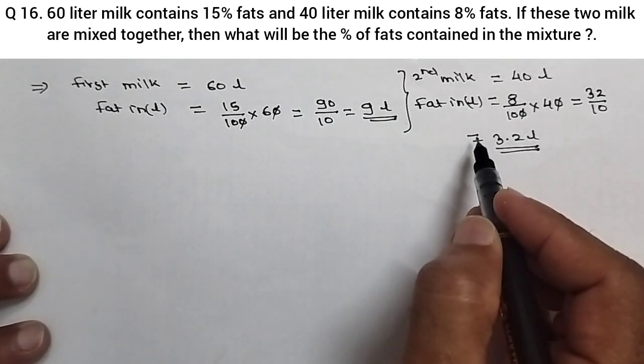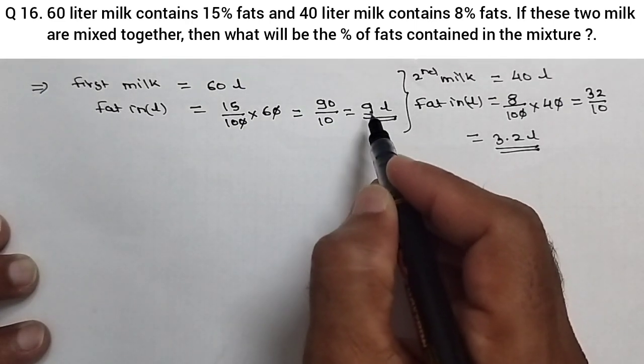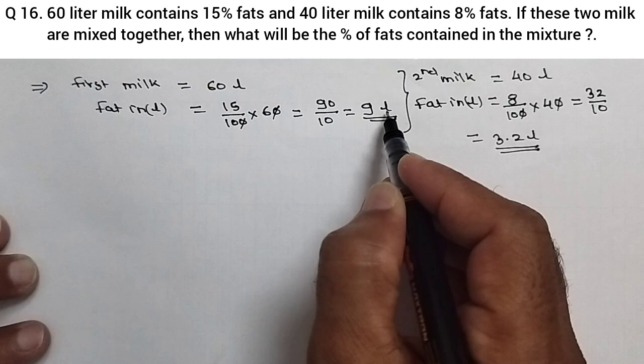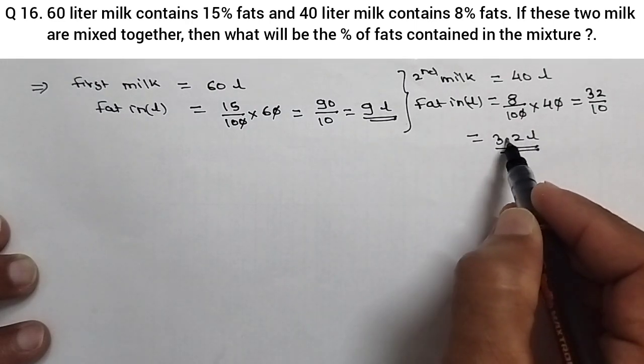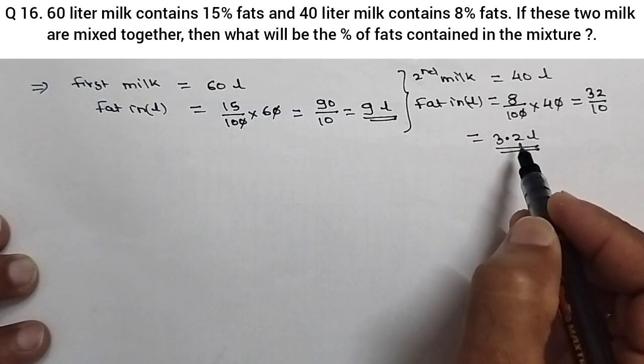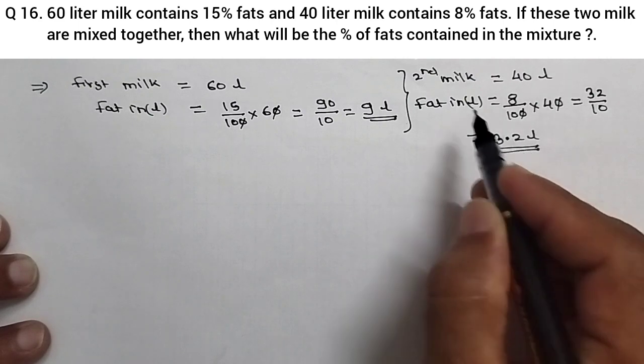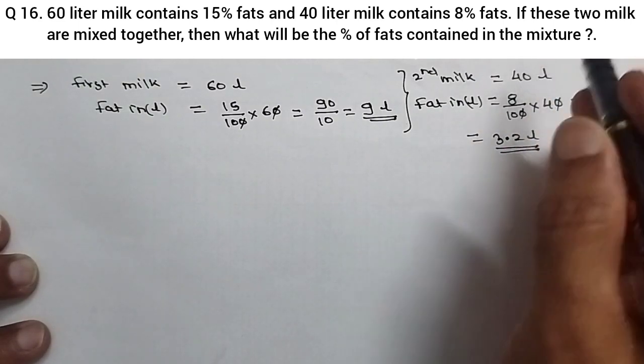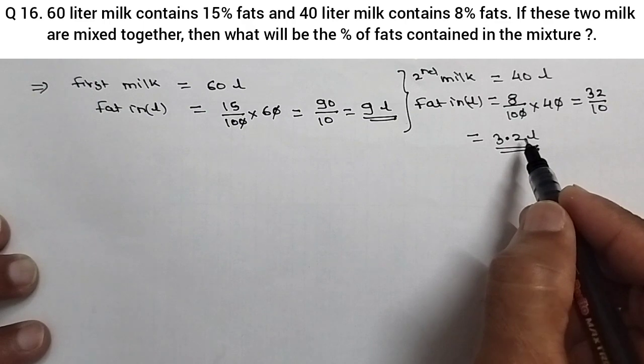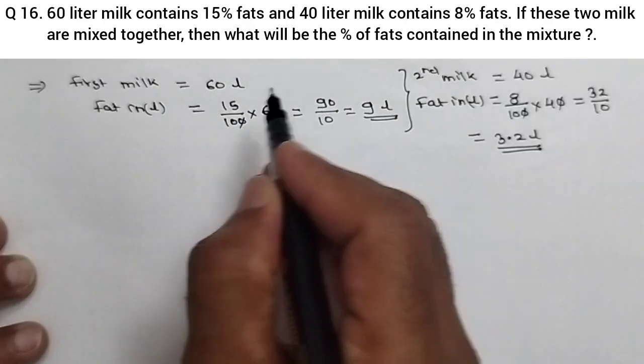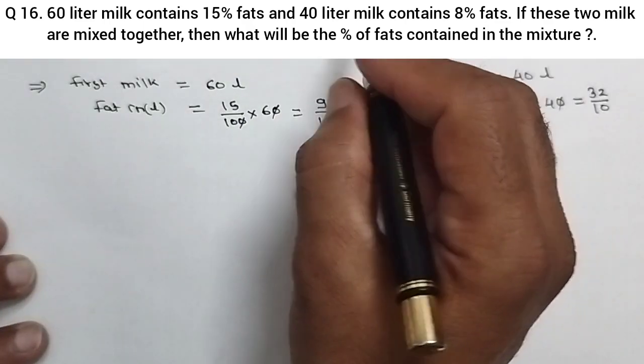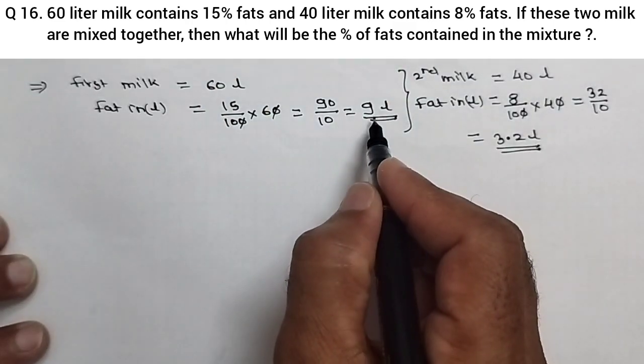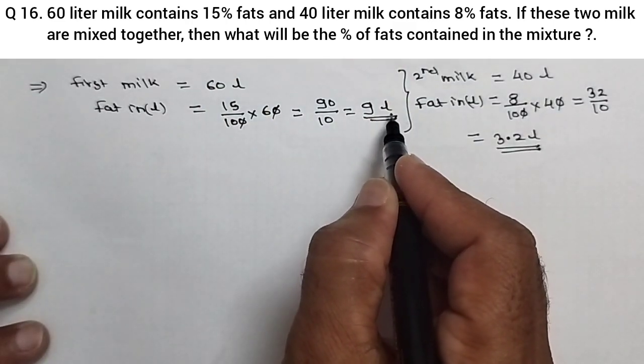So we got the fat contents in liters for both milks. For the first milk, 9 liter is fat and for the second milk, 3.2 liter is fat. Percentage is different. For second milk, percentage is 8%, but in liter it is 3.2. And for the first milk, percentage is 15%, but liter is 9 liter.